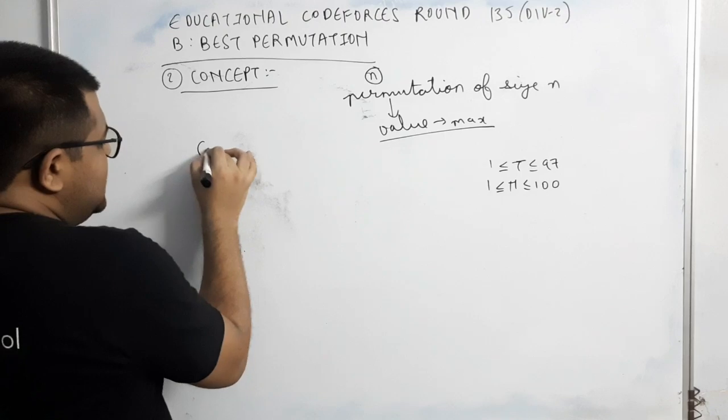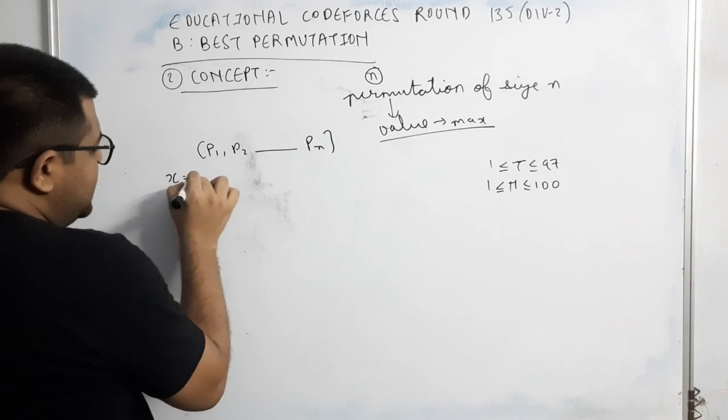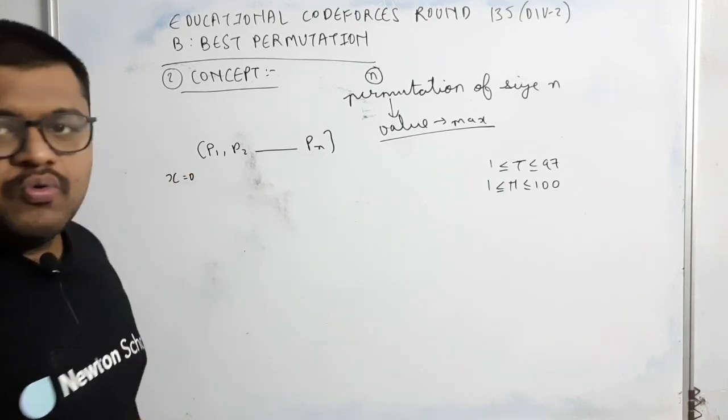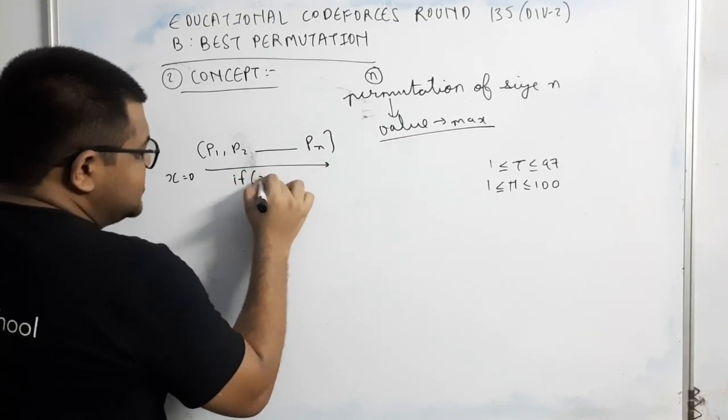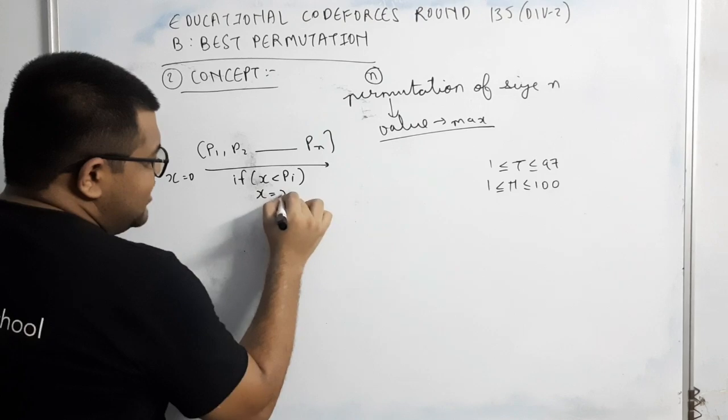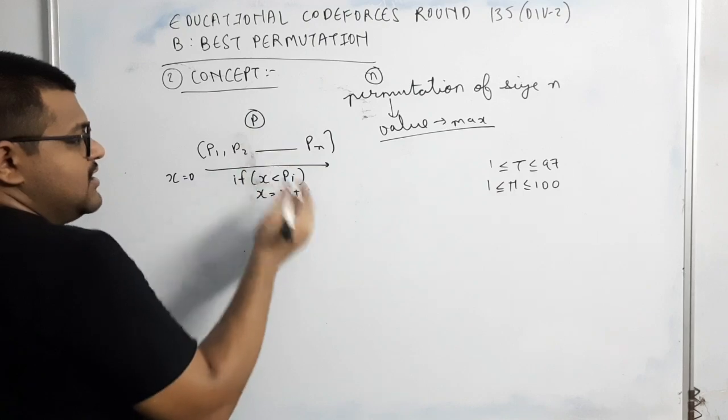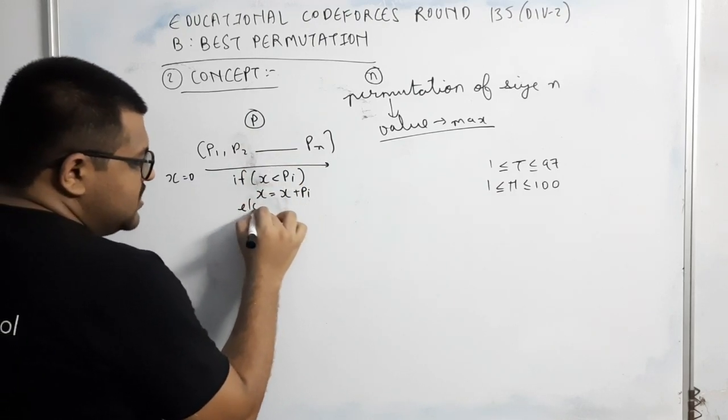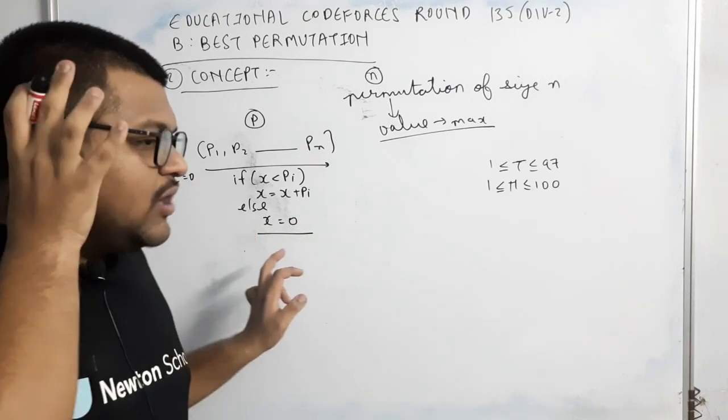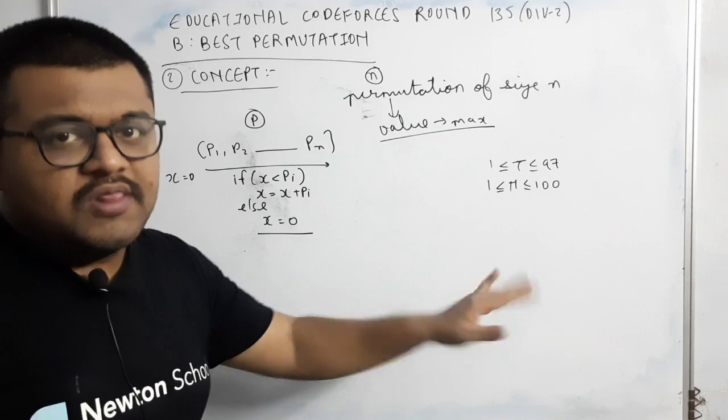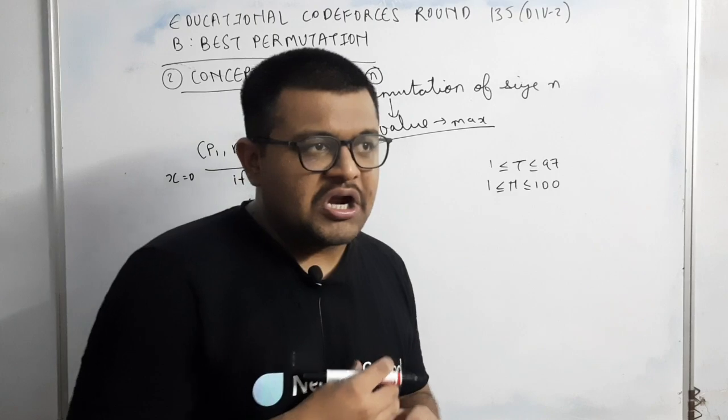अब value कैसे निकालते हैं? एक बार just revise कर लेते हैं. हमें understanding the question वाले part में तो दिखा दिया था. Initially, जैसे कि यह हमारा P1, P2 up to Pn है. तो initially x variable की value zero रखेंगे. फिर i equal to 1 to n traverse करेंगे. अगर किसी point पे x की value less than Pi है, तो x की value होगी x plus Pi. मतलब कि यह अगर permutation को main array P नाम देता हूं, तो ith element. और अगर उसकी value greater than equal to Pi है, तो x को हम zero assign कर दें. तो final x की value होगी after iterating through all the elements. वोही यह हमारी value होगी. उसको हमें maximize करना है.